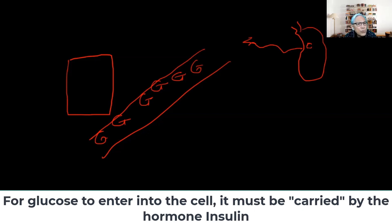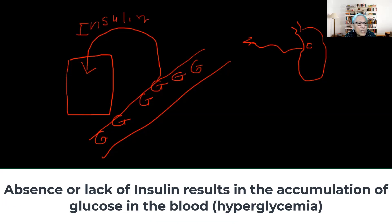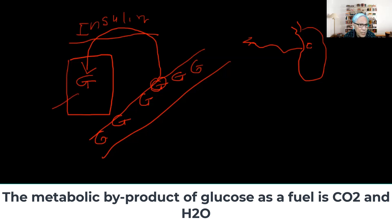Glucose relies on a passive transporter, and that passive transporter is insulin. Without insulin, or with insufficient insulin, glucose will not be able to enter the cell. Insulin is the passive transporter of glucose into the cell, providing the metabolic fuel. The offshoot of this metabolic activity is carbon dioxide and water.